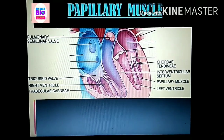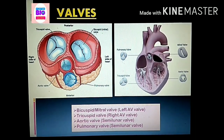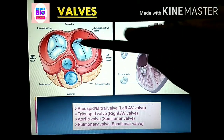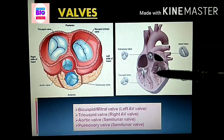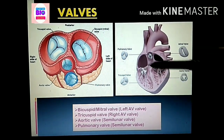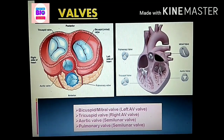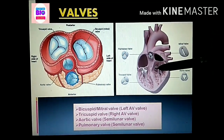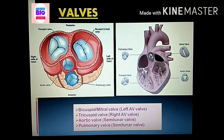Point four: valves of heart. One of the most important features inside the heart is the valves. There are mainly two types of valves. The first type are the atrioventricular valves, present in between the region of the atrium and ventricle. The second type is the semilunar valve, present in between the ventricle and the artery.